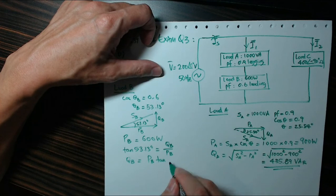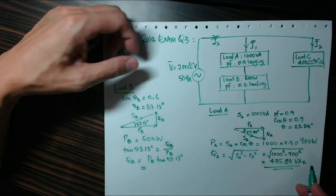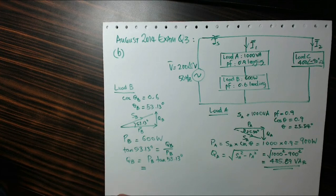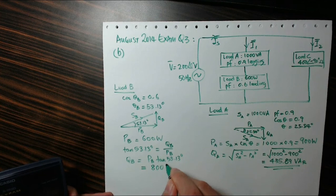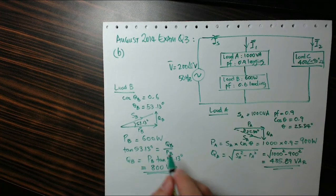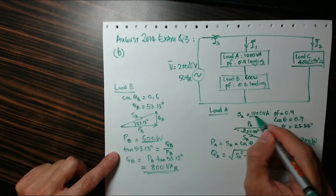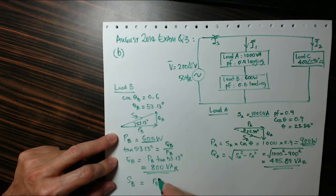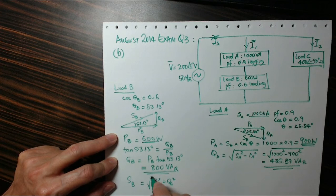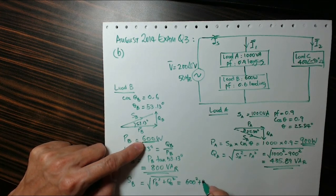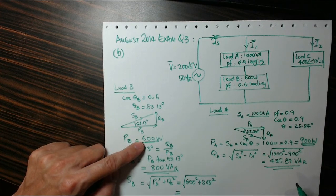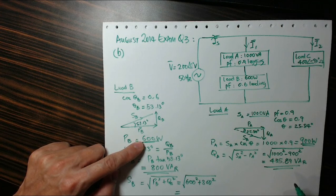Therefore QB is PB tangent theta, that's equal to 600 times tangent 53.13 degrees, which equals 800 VAR. So I have PB like this. Now my apparent power SB is just the square root of PB squared plus QB squared. This is 600 squared plus 800 squared, which gives me 1000 VA.